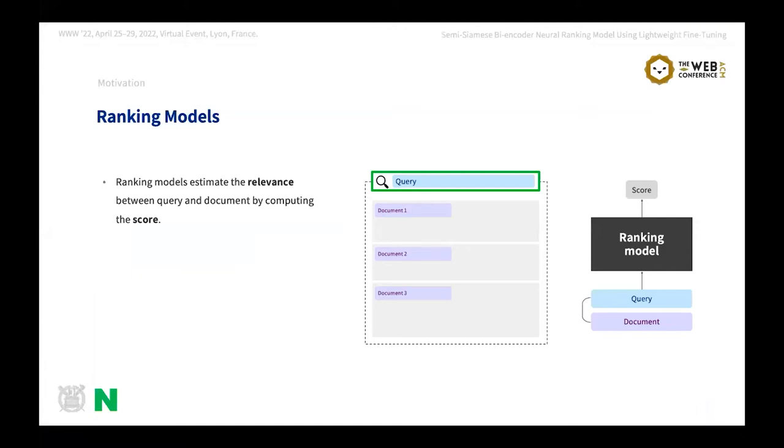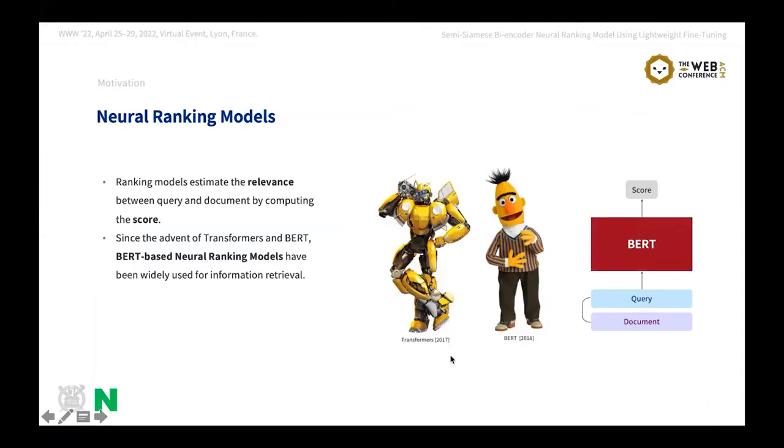I would like to introduce the theory of ranking models for short. For information retrieval, we rank the documents given a query by estimating the relevance between the query and documents. Our ranking model does the estimation by computing the score between the query and document. Since the advent of Transformers and BERT in 2017 and 18, a large number of BERT-based neural ranking models have been developed. BERT-based NRMs have shown state-of-the-art performances in information retrieval thanks to this contextualized representation.